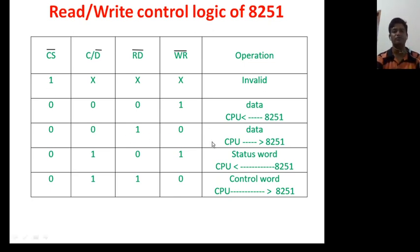When its value is zero one zero, then data is going from CPU to 8251.